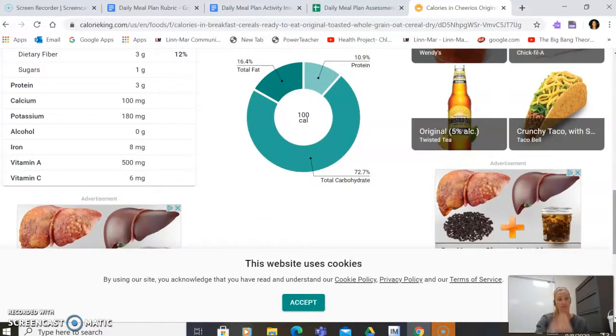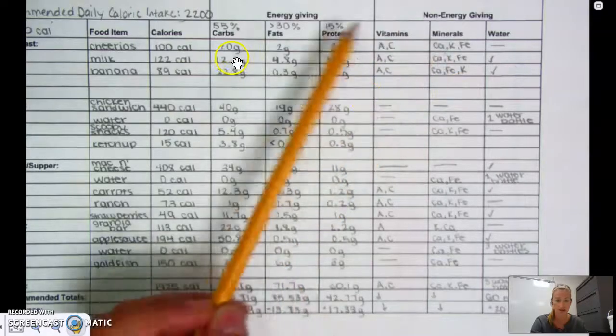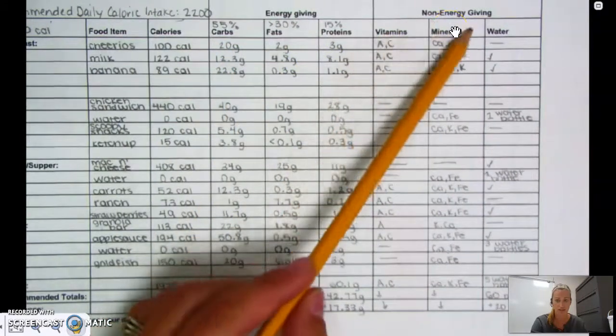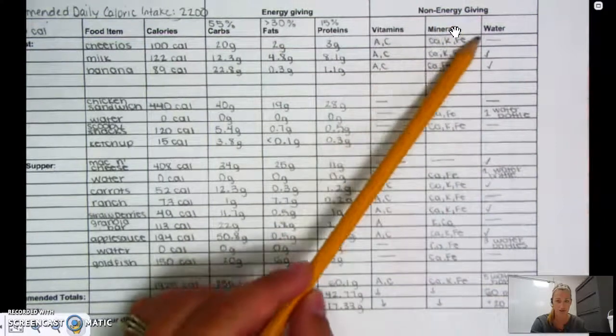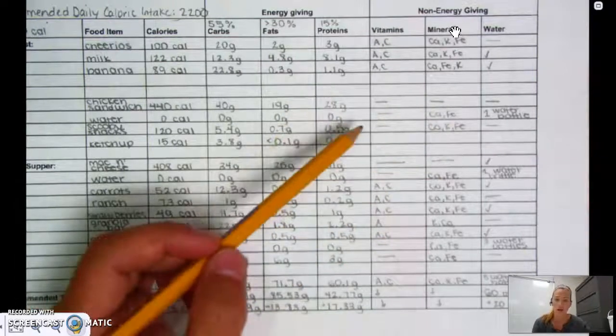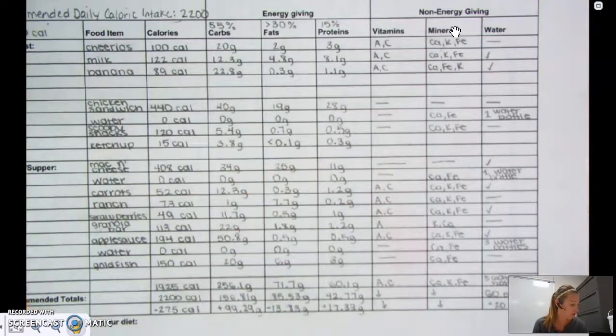Okay. So these are listed in grams or milligrams. You do not have to write that when it comes to your non-energy giving nutrients. Okay. I will say that again. Please write the amounts in grams on your energy giving nutrients. You do not have to write the amounts in grams on your non-energy giving. Okay. You just have to record what is in there.